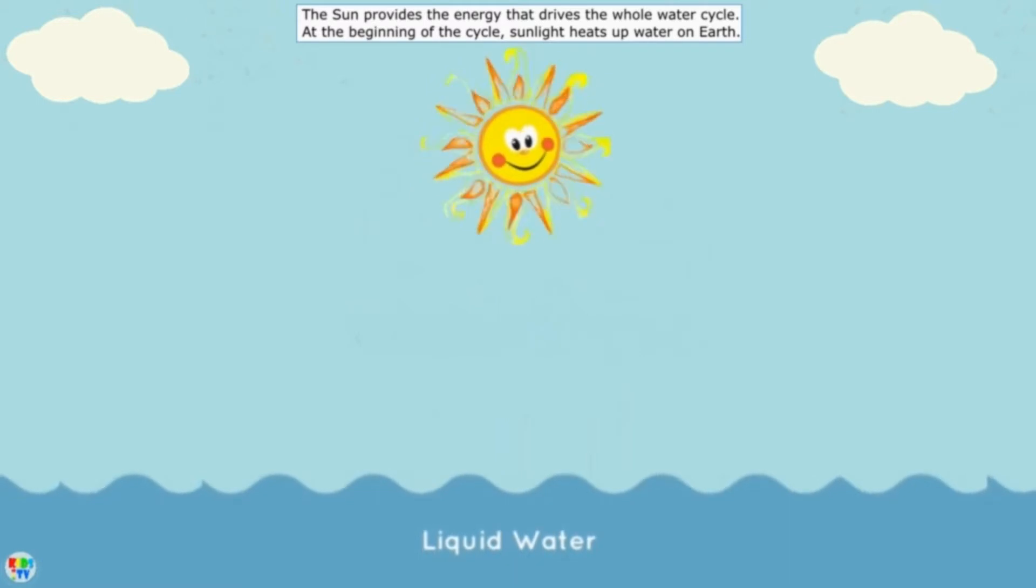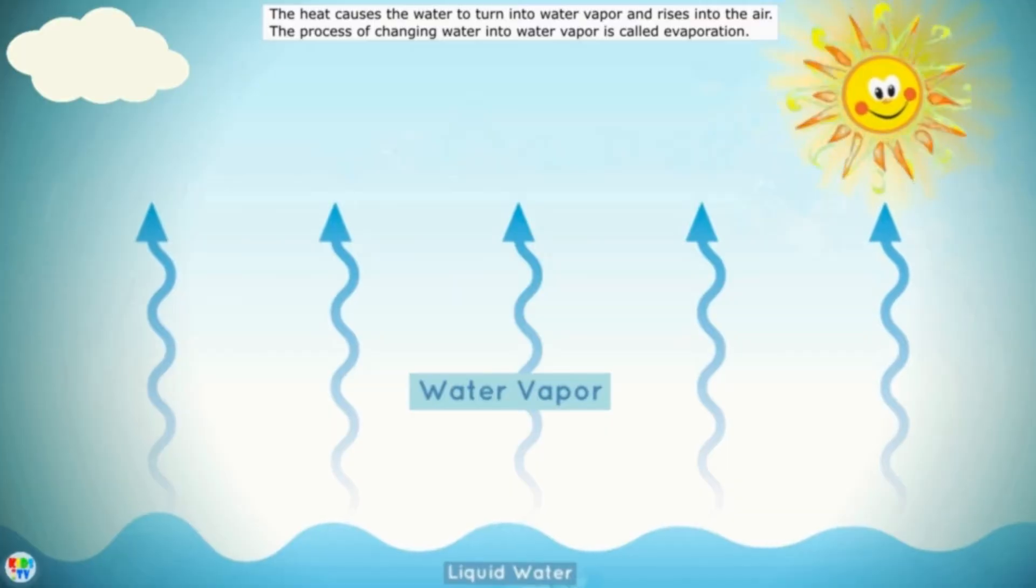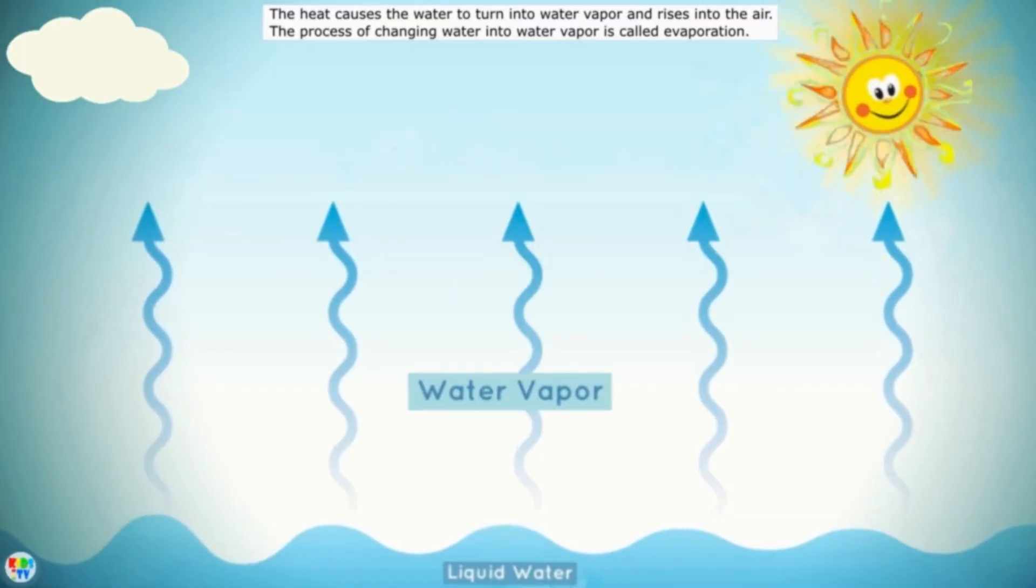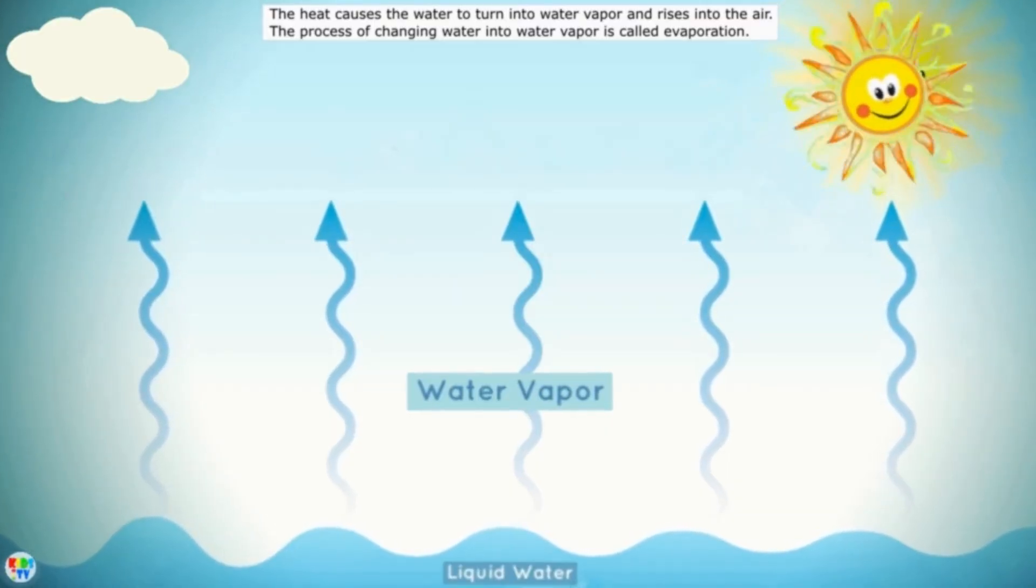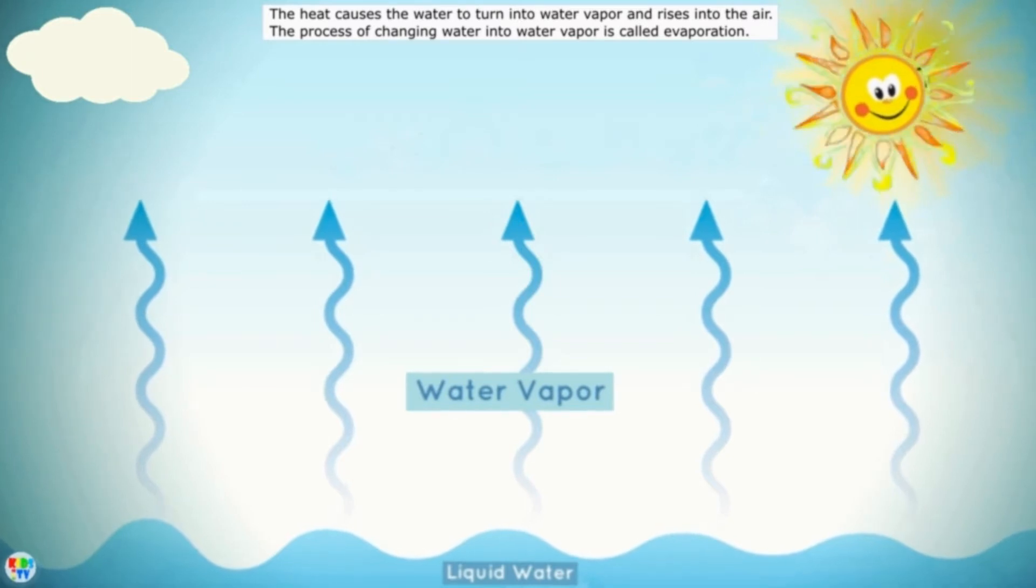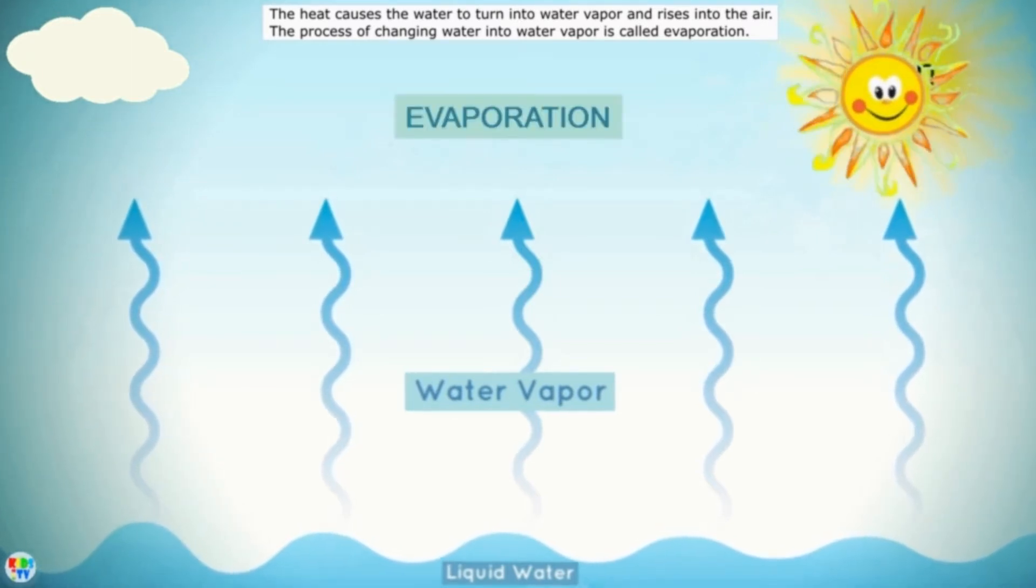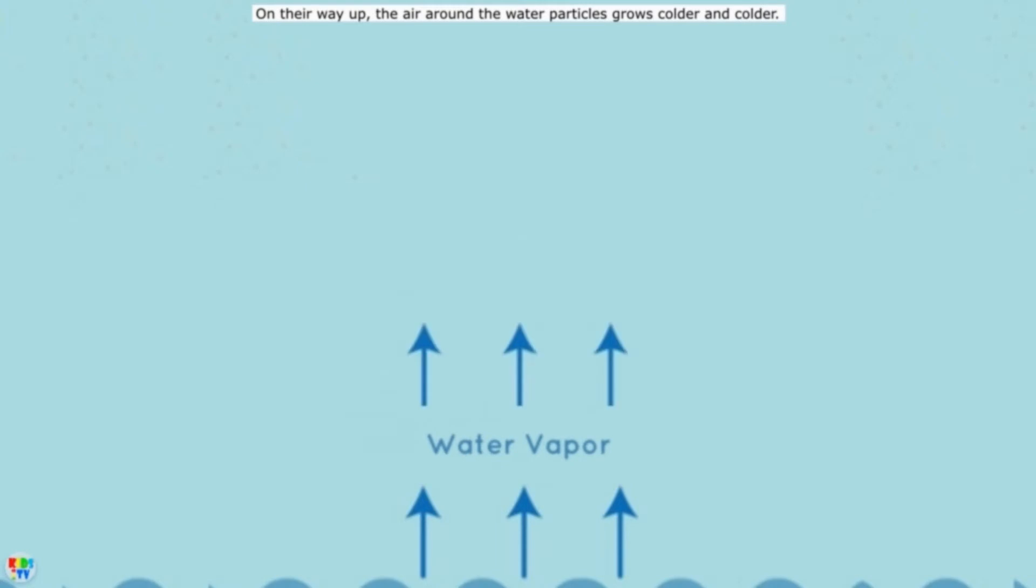At the beginning of the cycle, sunlight heats up water on Earth. The heat causes the water to turn into water vapor and rise into the air. The process of changing water into water vapor is called evaporation. On their way up, the air around the water particles grows colder and colder.